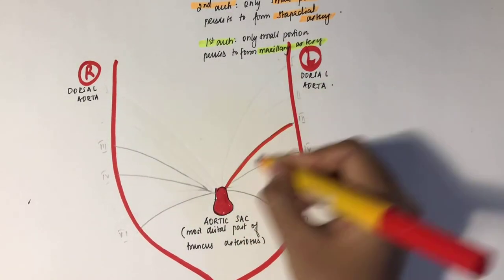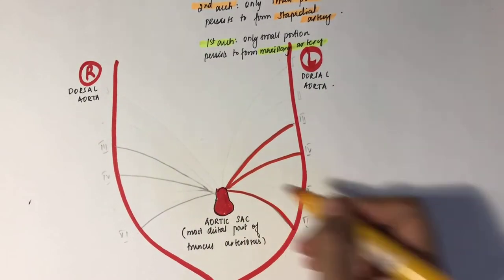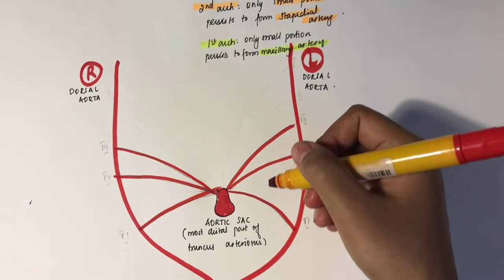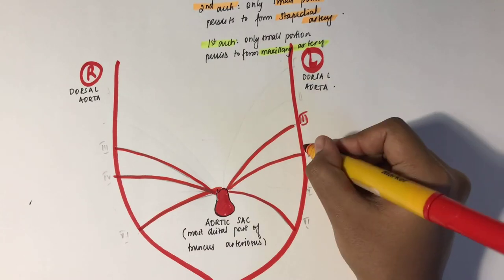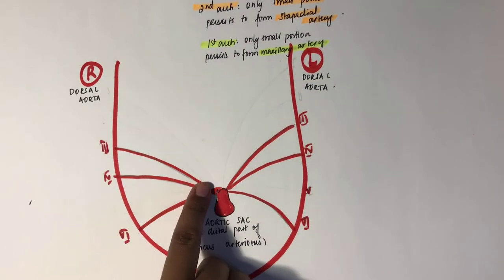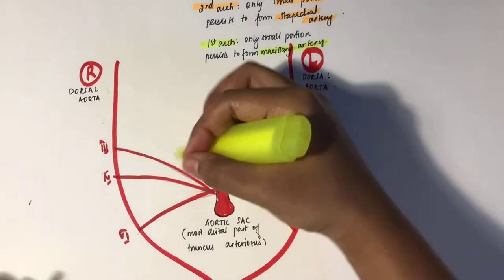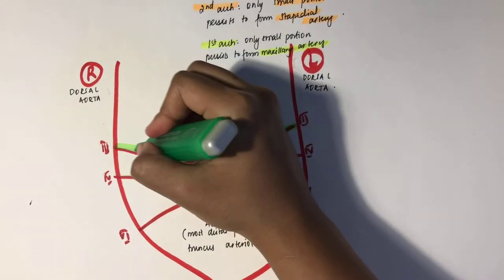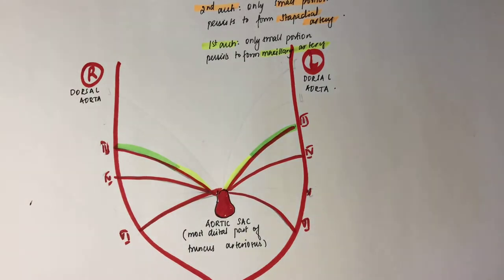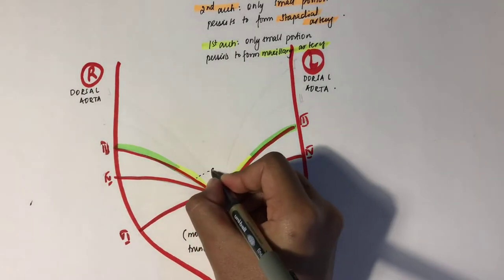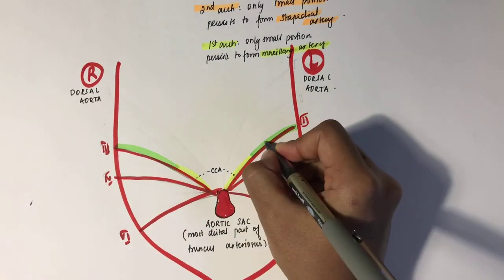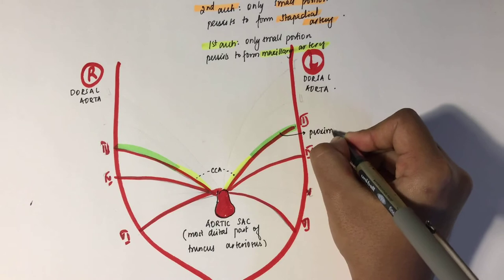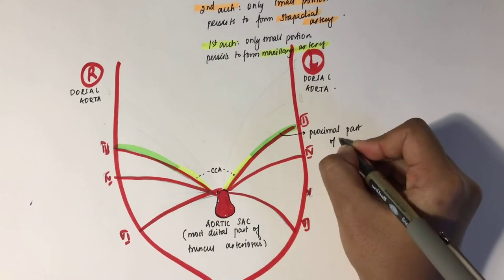We're now left with three major arches — the third, fourth, and sixth — and we'll discuss each derivative. Starting with the third arch: it forms the common carotid artery and the proximal part of the internal carotid artery, as shown here.